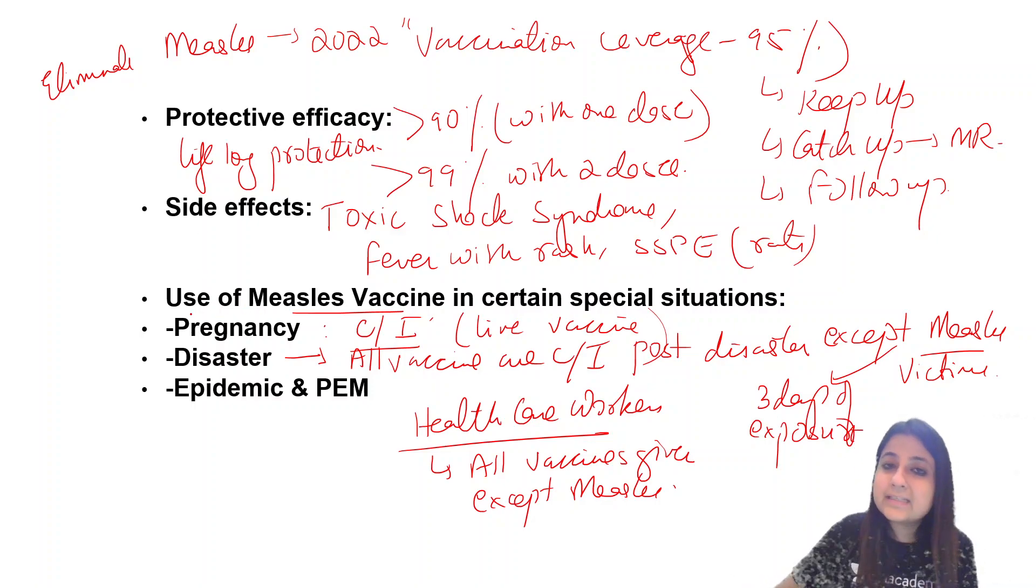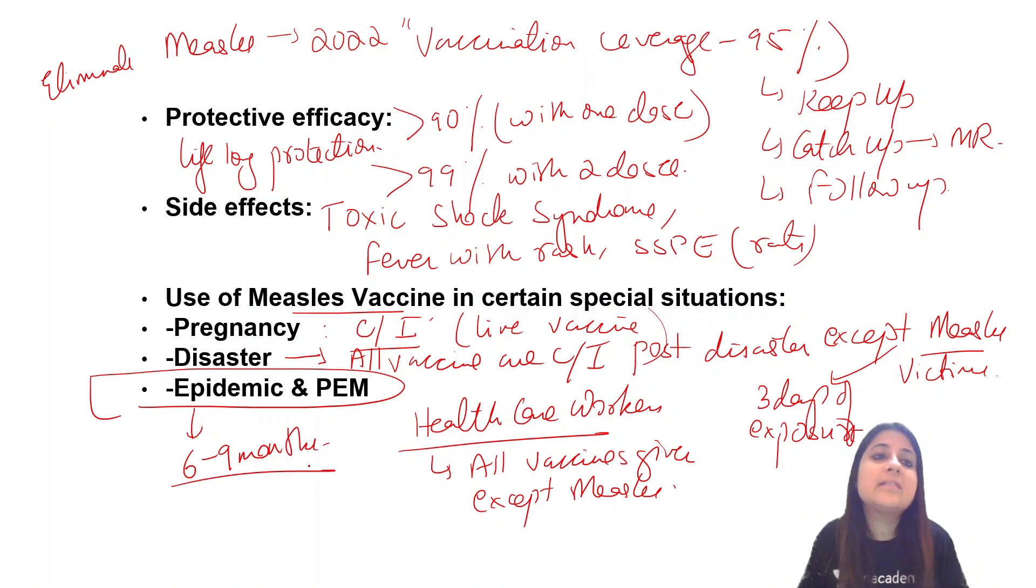Measles vaccine is given at nine completed months, but if there's an outbreak or a case of PEM, you can give it between six to nine months. Below six months, you don't need to give measles vaccine because we have protection from maternal antibodies. Six to nine months, only during epidemics.